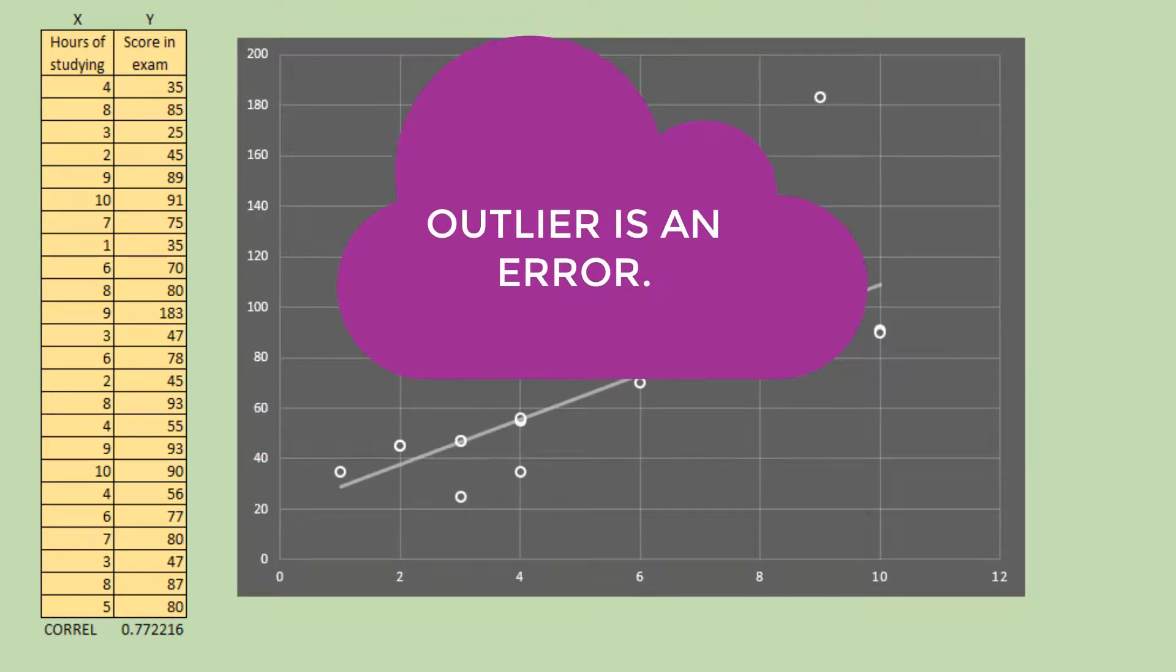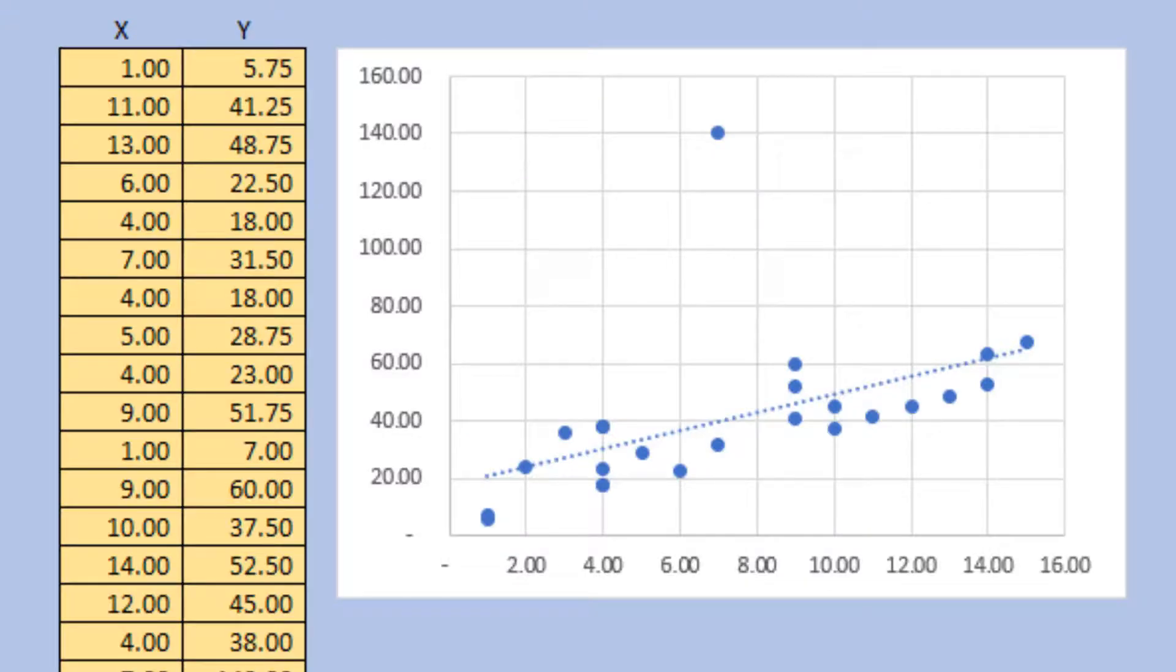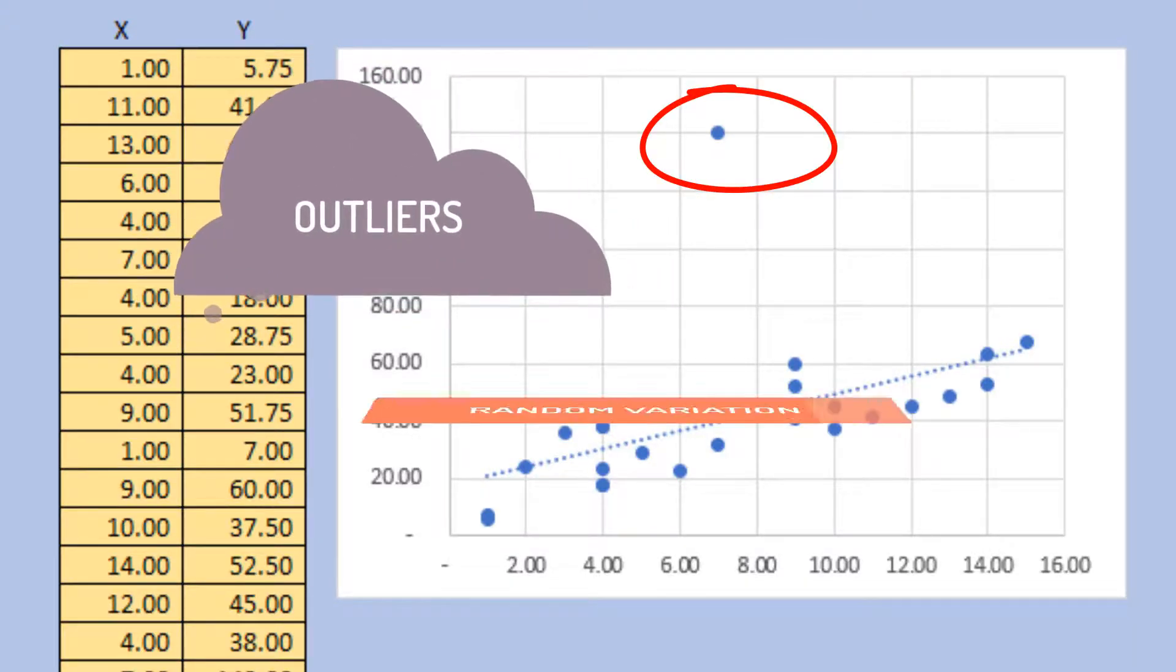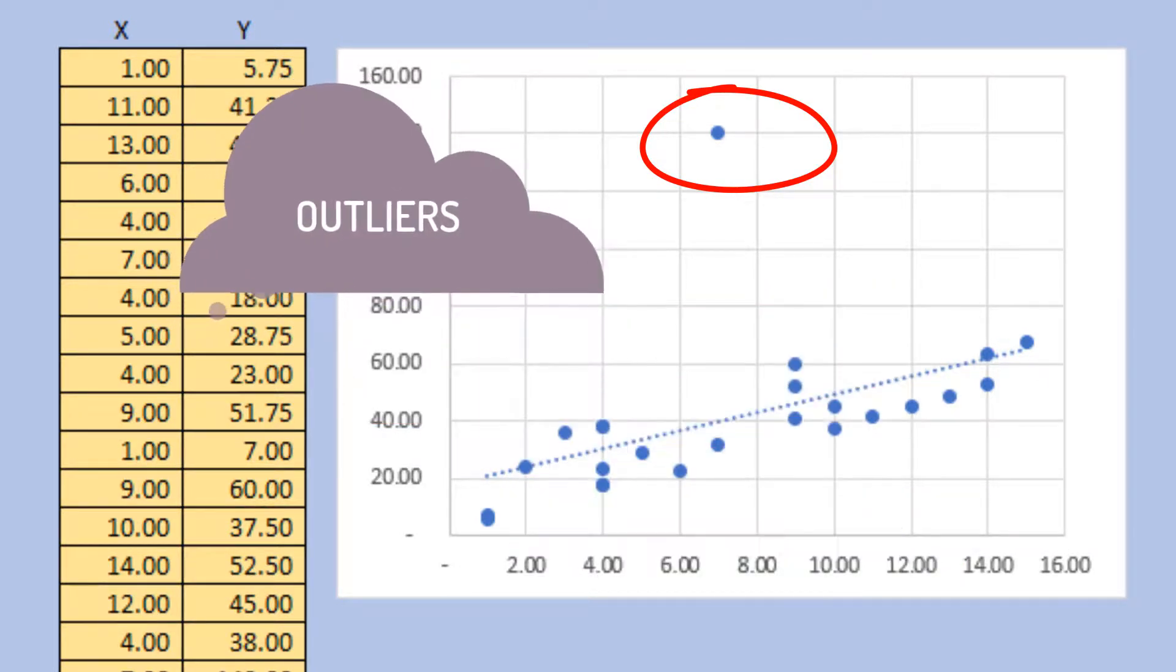If it is determined that an outlying point is an error, then the value should be deleted from the analysis or corrected if possible. Sometimes, outlier may be due to random variation or may indicate some interesting information. In any event...